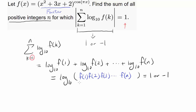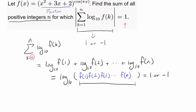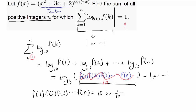So what does that tell us about the product inside? We know log base 10 of this product has to be 1 or negative 1. That means f of 1 times f of 2 times f of 3 all the way to f of n has to be either 10 or 1 tenth. Because log base 10 of 10 is 1, and log base 10 of 1 tenth equals negative 1. So from this constraint, we know the product f of 1 times f of 2 all the way to f of n must equal 10 or 1 tenth.